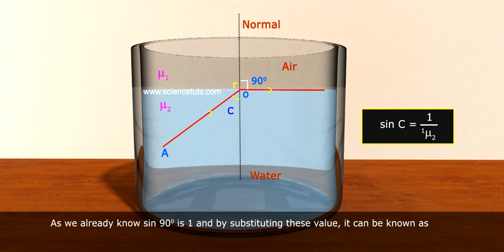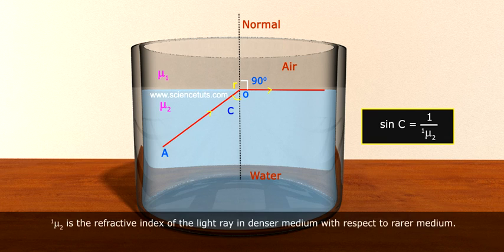it can be known as sin C is equal to 1 by 1 mu 2. 1 mu 2 is the refractive index of the light ray in denser medium with respect to rarer medium.